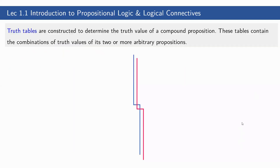First, let us discuss truth tables. These are constructed to determine the truth value of a compound proposition. These tables contain the combinations of truth values of its two or more arbitrary propositions.